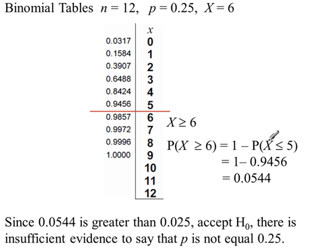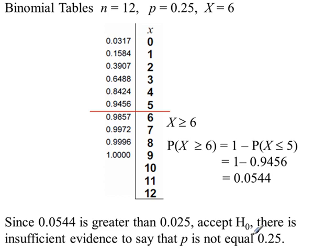We get a probability of 0.0544, which is greater than the significance level. Remember we've split the significance level in half, so it's greater than 0.025. Because it's greater, we accept H0 and say there's insufficient evidence to say that p is not equal to 0.25, or there's insufficient evidence to say that p has changed.